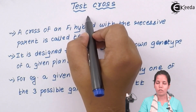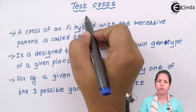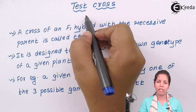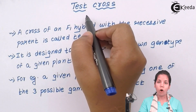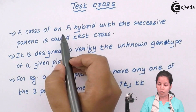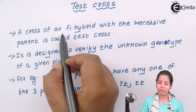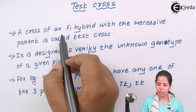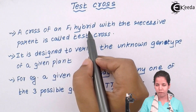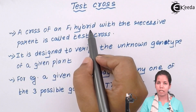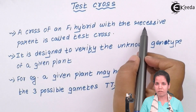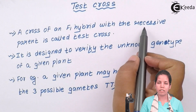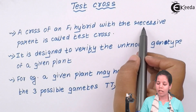Test cross — a cross that is used to verify various outcomes in different laws done by Mendel on the Pisum sativum plant, or pea plant. The definition of test cross is: a cross of the F1 hybrid, or the F1 progeny, with the recessive parent or the homozygous parent.